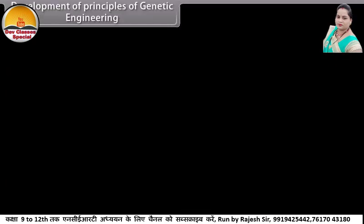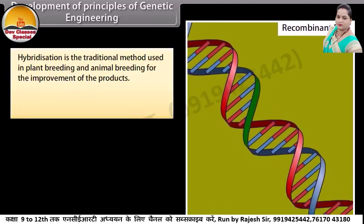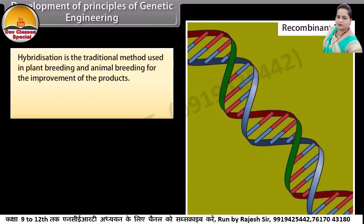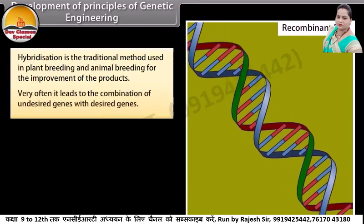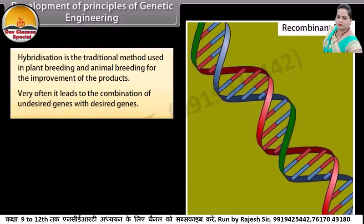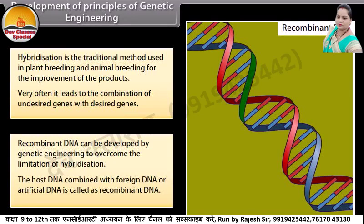Development of principles of genetic engineering. Hybridization is the traditional method used in plant breeding and animal breeding for the improvement of products. Very often it leads to the combination of undesired genes with desired genes. Recombinant DNA can be developed by genetic engineering to overcome the limitation of hybridization.